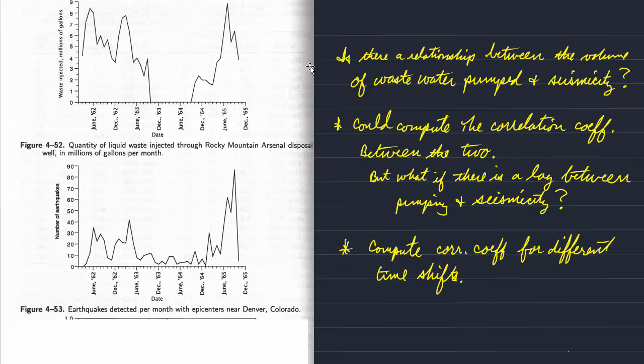So let's return to our original question. Is there a relationship between the volume of wastewater pumped and the seismicity? Well, it looks like there is. But to rigorously test whether there is, we have to do a simple test. And this test will be a t-test very much like the t-test used for the simple linear correlation.